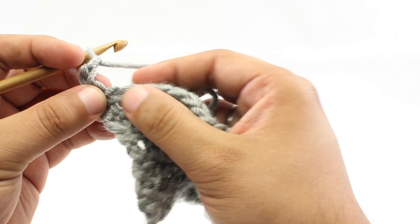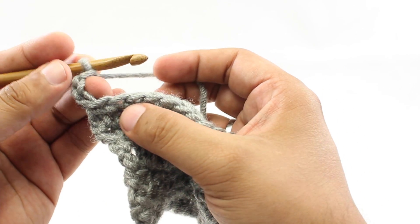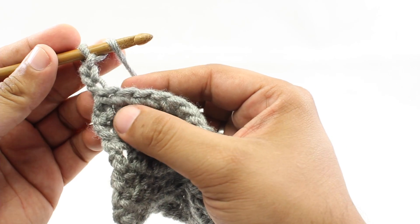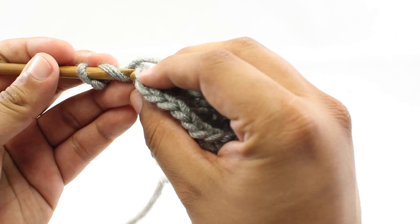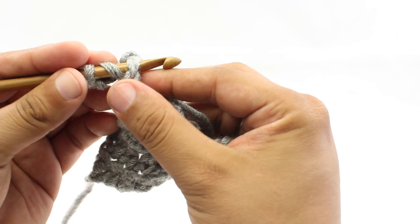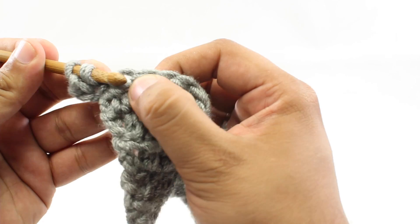Alright, now to do the extended half-double crochet: for step 1, yarn over our hook. For step 2, we're going to insert our hook into the next stitch. And for step 3, we're going to yarn over and draw through a loop.